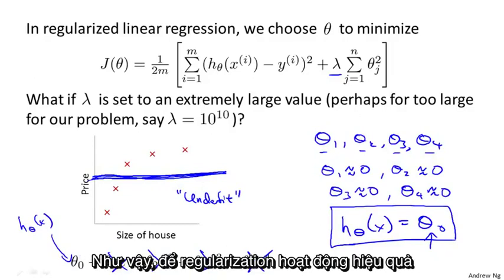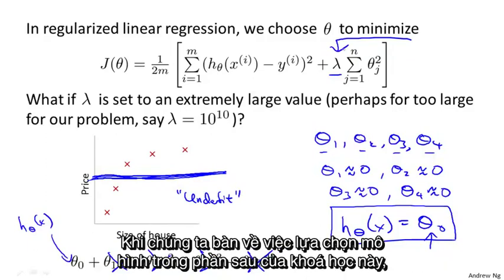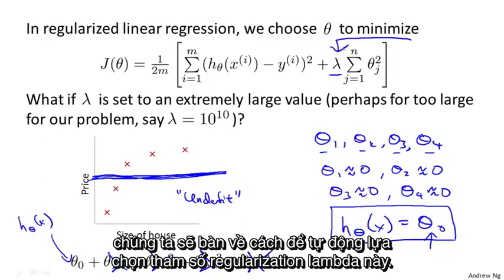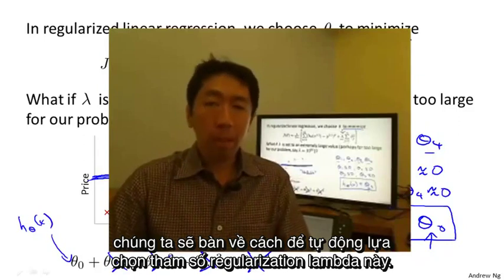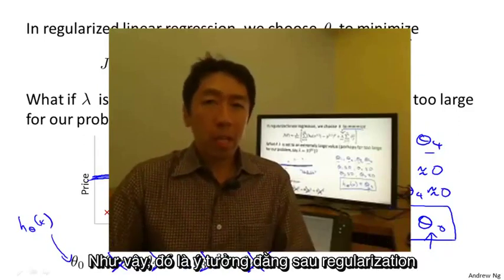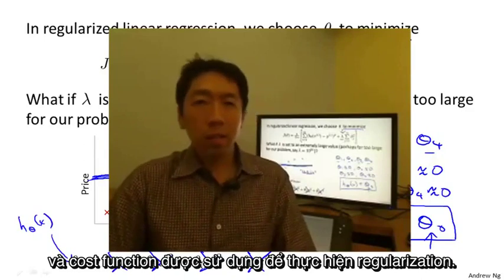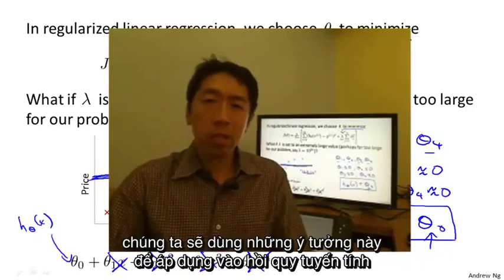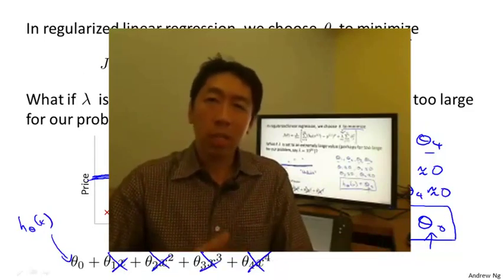So for regularization to work well, some care should be taken to choose a good choice for the regularization parameter lambda as well. And when we talk about model selection later in this course, we'll talk about a variety of ways for automatically choosing the regularization parameter lambda as well. So that's the idea behind regularization and the cost function we'll use in order to use regularization. In the next two videos, let's take these ideas and apply them to linear regression and to logistic regression so that we can then get them to avoid overfitting problems.